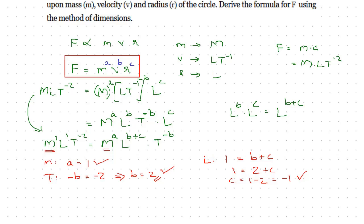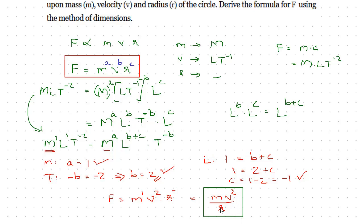Now substituting back into F equals M raised to a, V raised to b, R raised to c, we get F equals M raised to 1, V raised to 2, R raised to minus 1. Since R raised to minus 1 goes to the denominator, the formula becomes F equals mv² divided by r. This is the centripetal force formula.